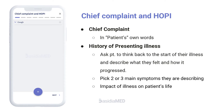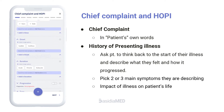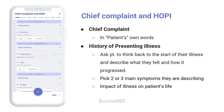Chief Complaint and History of Presenting Illness: Record the chief complaint in the patient's own words in chronological order. Then ask the patient to think back to the start of their illness and describe what they felt and how it progressed. Begin with open questions to get your patient talking about the symptoms. As they talk, using their inputs, start describing each symptom under headings like onset, character, types, etc.